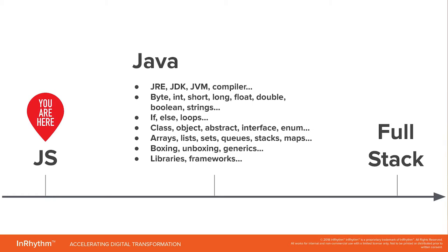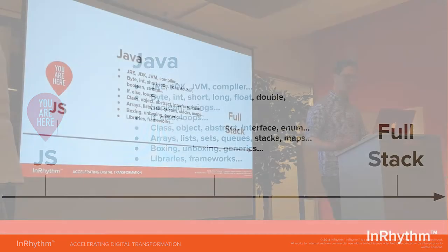There are more variable types: byte, int, short, long, float, double, boolean, and strings. It also has richer classes — classes and objects as well as abstract, interface, and enum. Instead of just arrays and hash objects, you have arrays, lists, sets, queues, stacks, and maps. And you have stuff you've never even heard of as a JavaScript developer — things like boxing, unboxing, and generics. In addition, there are all the libraries and frameworks that go with the ecosystem. So it's a lot.